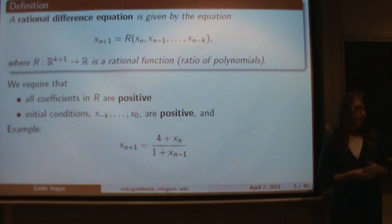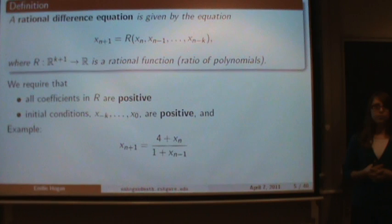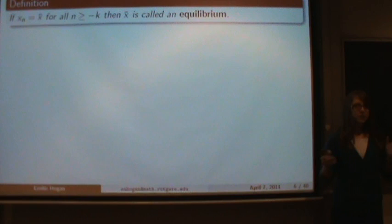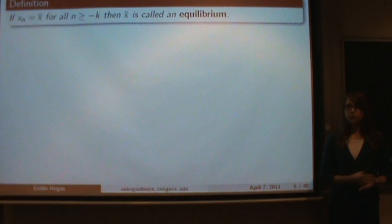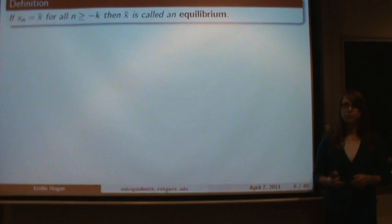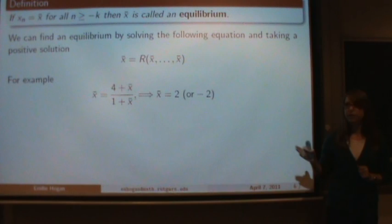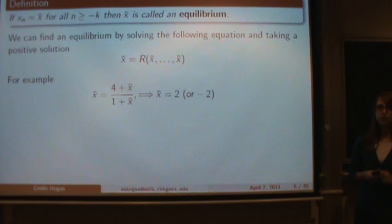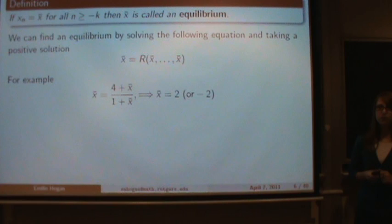For example, here's a rational difference equation where the n plus first term equals four plus the nth term, divided by one plus the n minus first term. If our initial conditions are all taken equal to some value x-bar, and we get the constant sequence all equal to x-bar, we call that value an equilibrium. We can find an equilibrium by solving the equation: if all initial conditions equal x-bar, the next term must also equal x-bar. For our example equation, we get two possibilities, 2 and negative 2, but since initial conditions must be positive, we pick positive 2.